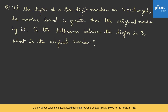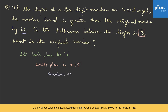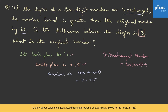If the digits of a two-digit number are interchanged, the number formed is greater than the original by 45. If the difference between the digits is 5, what is the original number? When interchanged the number increases, so units place is higher. Let tens place be x and units place be x + 5. The original number is 10x + (x + 5) = 11x + 5, and the interchanged number is 10(x + 5) + x = 11x + 50.